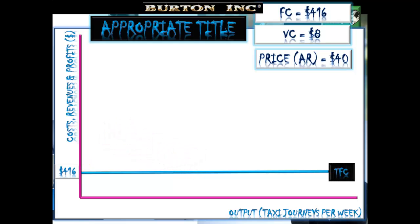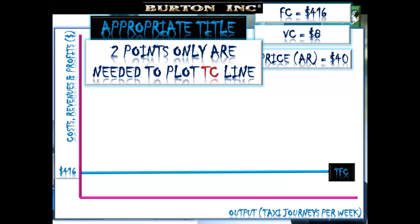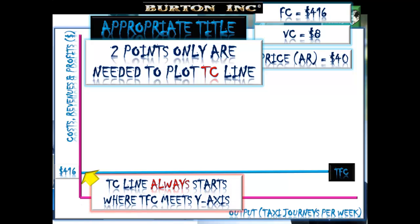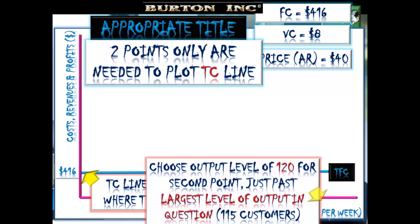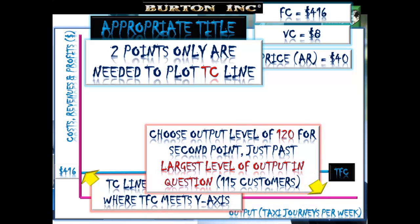Draw the fixed cost line in and label it. To produce our total cost line, we just need two points, then put a ruler between them and extend out if necessary. Remember total costs are fixed costs plus variable costs. If we're producing nothing, our total costs are just our fixed costs, so the total cost line always starts where total fixed cost meets the Y-axis. We're going to choose an output level just past the largest amount mentioned in the question — 115 customers — so I'll choose 120 as my second point.